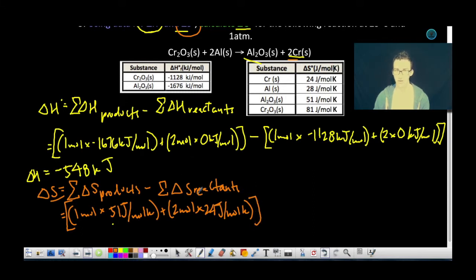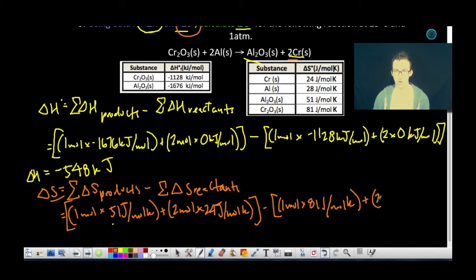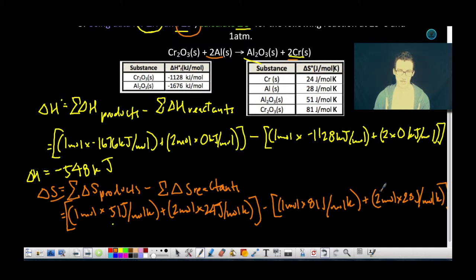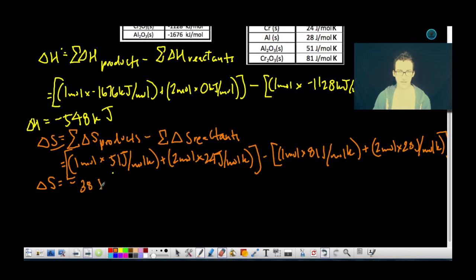Just some things to watch out for when working with entropy. We're going to subtract from that the sum of our entropy changes for our reactants, which will be one mole times 81 joules per mole kelvin plus two moles times 28 joules per mole kelvin. This is a great example of an element that you may easily confuse and put in as zero, which you would do in an enthalpy or Gibbs free energy calculation. Plugging it into our calculator gives us an entropy change of negative 38 joules per kelvin.